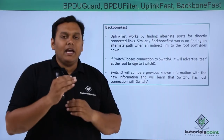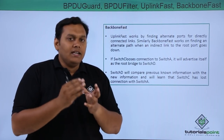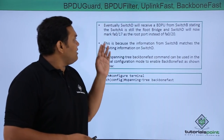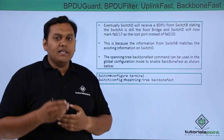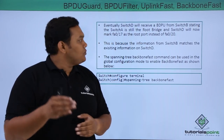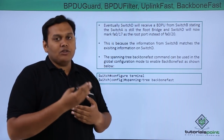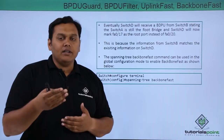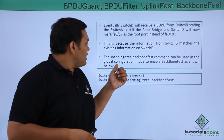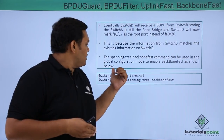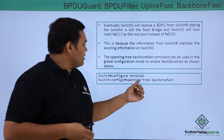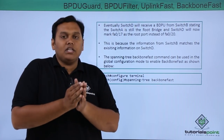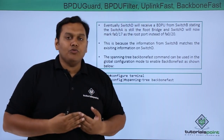Switch D updates its information, and eventually switch D will receive a BPDU from switch B stating that switch A is still the root bridge. Switch D will then allow interface FA0/17 as the root port instead of FA0/20. The 'spanning-tree backbone fast' command is used in global configuration mode to enable backbone fast, which allows the switch to search for an alternative route for indirect links between two physical devices.